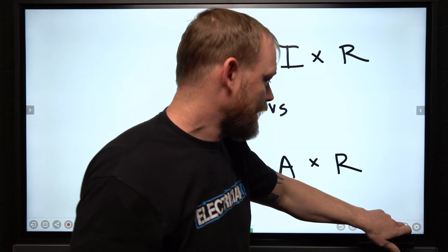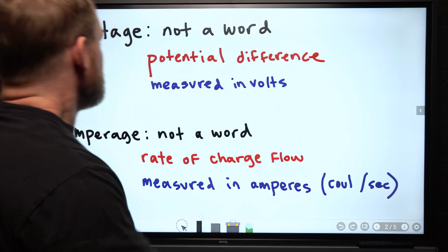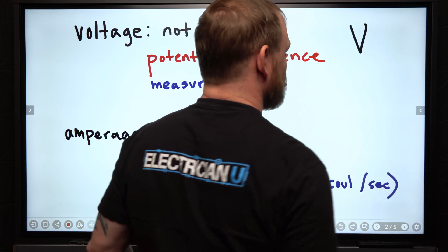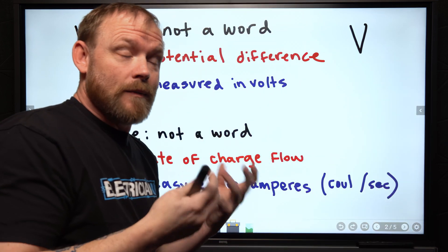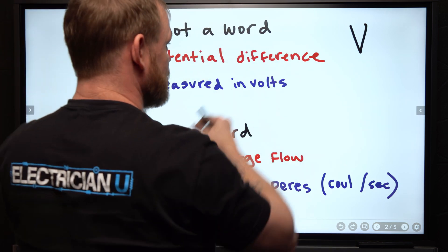So here's the deal. This is wrong. This is right. And I'm going to tell you why. So voltage. The reason that we don't say V for voltage, voltage is a measurement of something. We measure in volts, but what we're measuring is a thing called potential difference.